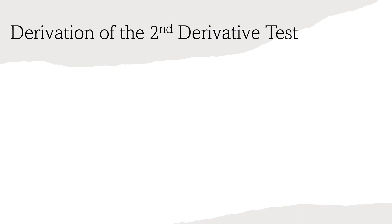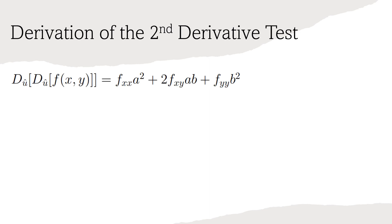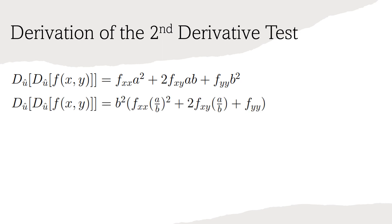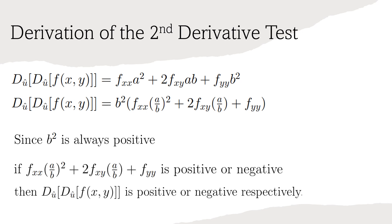Now we are finally ready to derive the second derivative test. We start with the second directional derivative expression from earlier. Recall that this expression represents the concavity in the direction of u. Next, factor out a b squared from each term. We know a real number squared is always positive, so b squared is always positive. Therefore, if the following expression is positive, then the directional concavity is positive. Or, if the expression is negative, the directional concavity is negative.